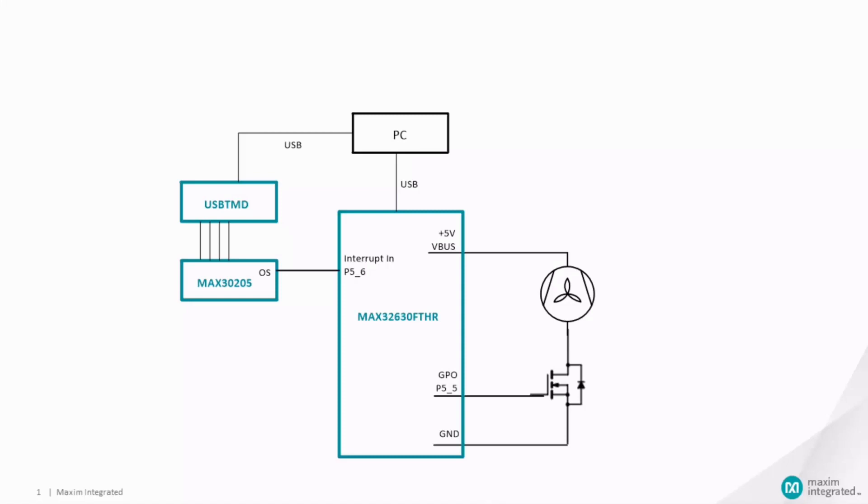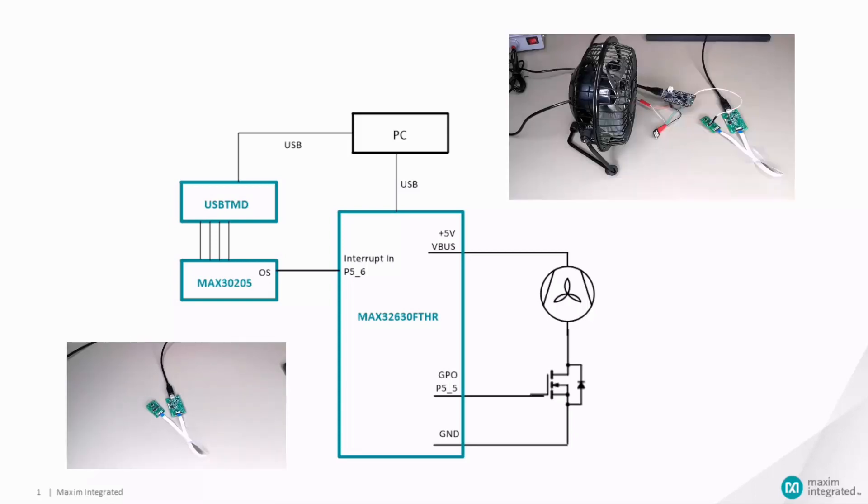For our demonstration we use the MAX3205 EVSYS, an N-channel MOSFET, a MAX32630 Embed Feather board, and a basic 5V fan that's commonly found on Amazon. So let's get started.